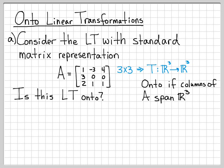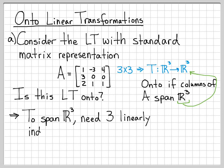Answering whether this linear transformation is onto is equivalent to checking if the columns of its standard matrix representation span the output space. To span R3, we need three vectors that are all linearly independent. Since we already have three column vectors, the question reduces to: are these three vectors linearly independent?